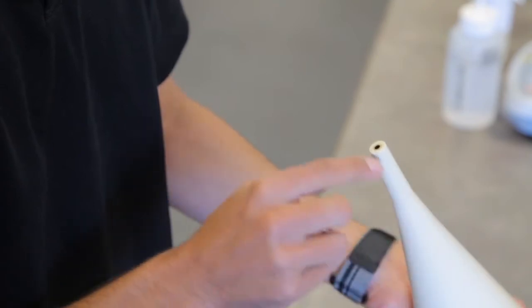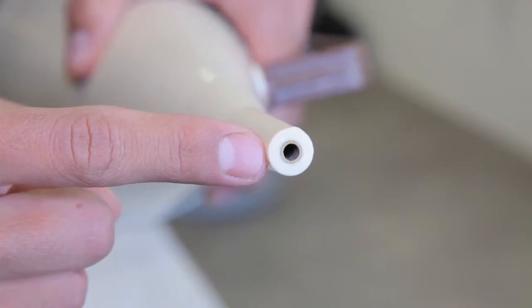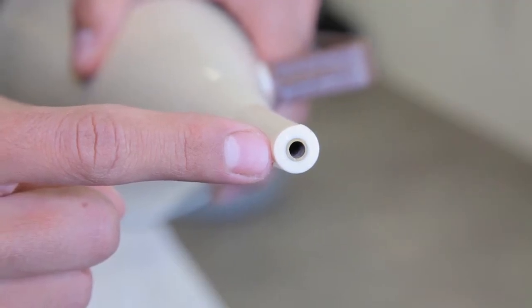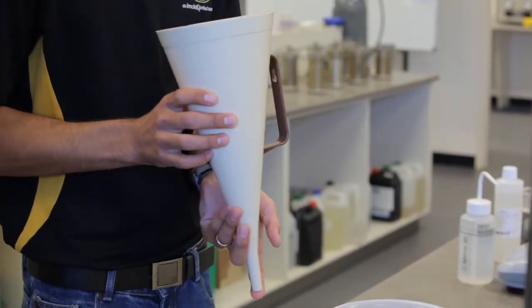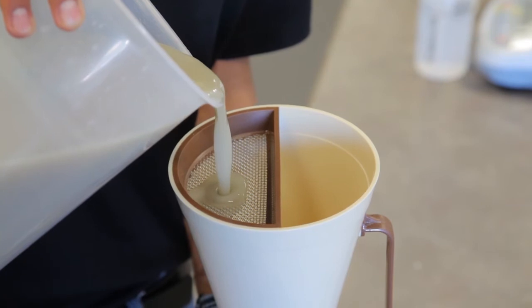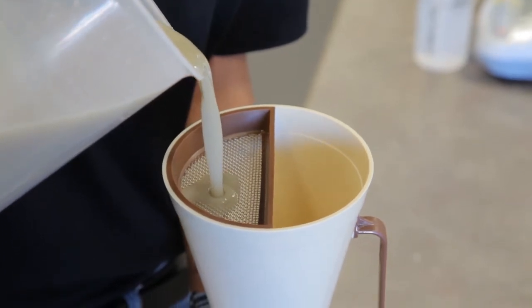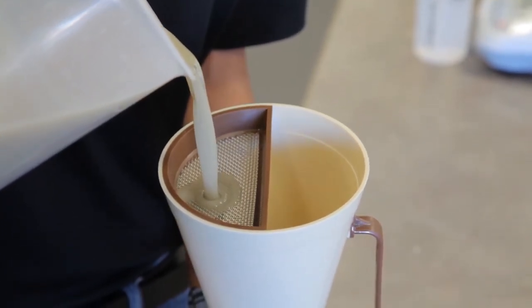First, check the brass fitting at the bottom of the funnel to make sure it's not blocked with any dried drilling fluid or foreign material. Cover this end with your finger, and then simply fill the funnel through the metal screen. This prevents fisheyes or crud from blocking the brass fitting at the base of the funnel.